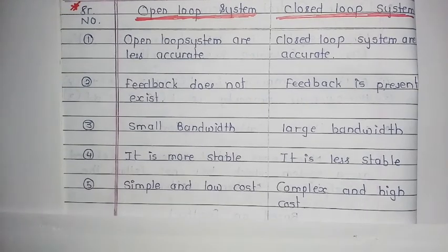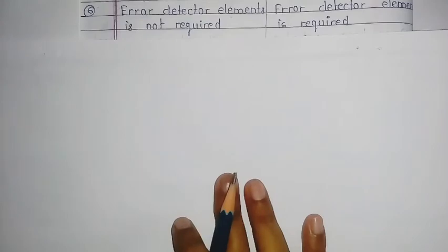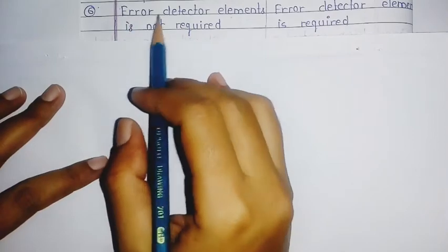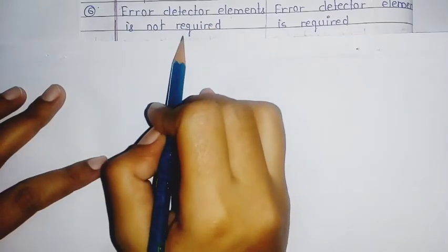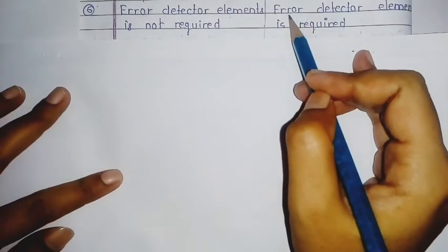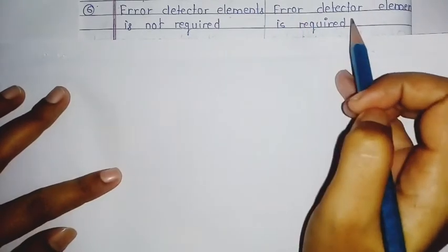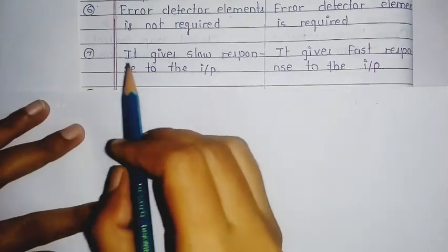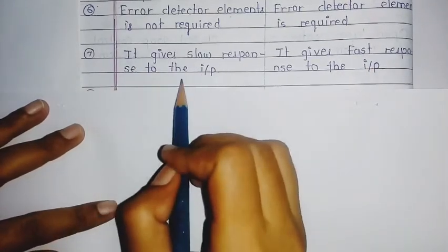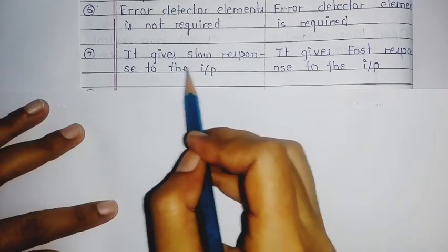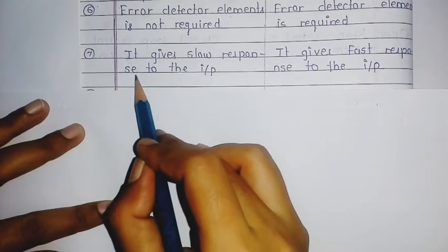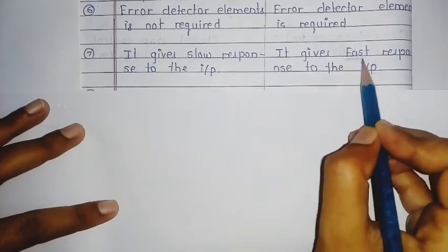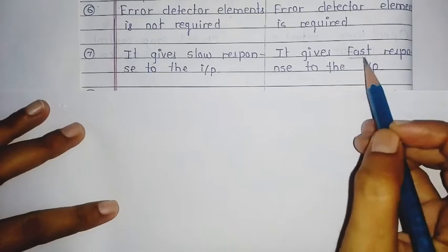The sixth point is that error detector elements are not required in the open loop system, but they are required in the closed loop system. The seventh point is response: the open loop system gives a slow response to the input, while the closed loop system provides a fast response.